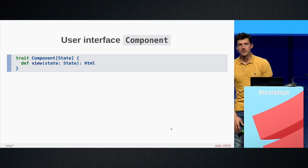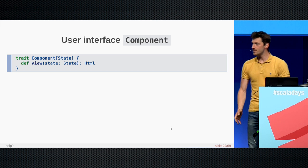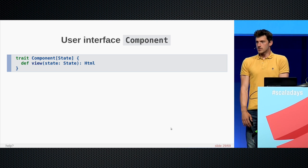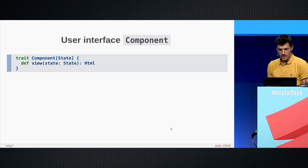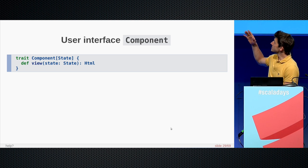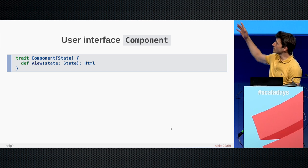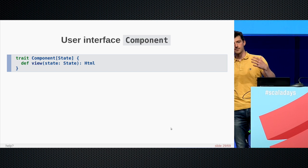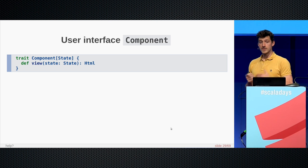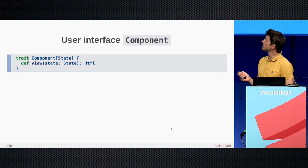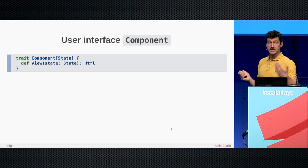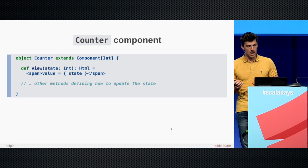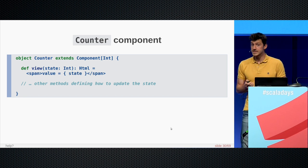To sum up about the encapsulation use case: abstract type members are an effective way to make a type opaque from the outside. Use this when you want to hide the actual implementation type of a module. Now let's expand on the topic of modules. Consider this abstraction: a component for user interface. A component is simple — given a current state, it returns a view of that state. An example is a counter: the state is just an integer, and the view returns an HTML fragment showing the counter value.